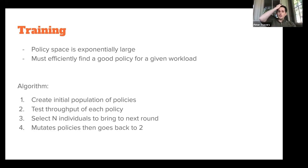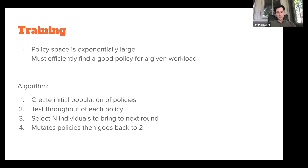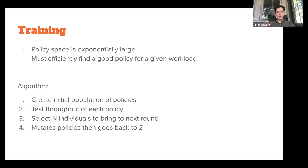The policy space is exponentially large, so we need to efficiently find a good policy for a given workload. They used an evolutionary algorithm. The approach is fairly standard: create an initial population of policies, test the throughput of each policy, select N individuals with the best throughput to bring to the next round, mutate them based on a probability, then ship them back to test throughput again. You keep running this until you arrive at a point where you think you've found the optimal policies.